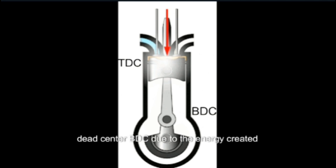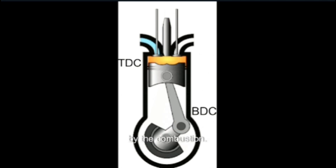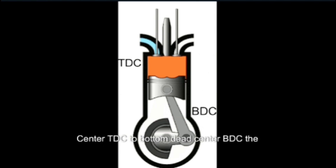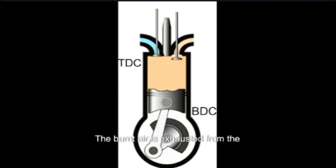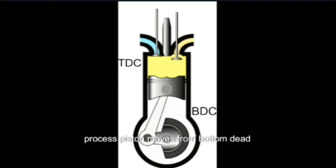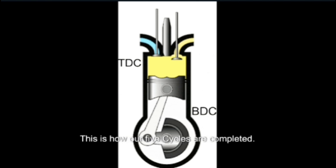Our fourth step is expansion. In this process, the piston again moves to Bottom Dead Center (BDC) due to the energy created by the combustion. As the piston head moves from Top Dead Center (TDC) to Bottom Dead Center (BDC), the expansion takes place. Our fifth and last process is exhaust. In exhaust, the burnt air is exhausted from the cylinder through the exhaust valve. In this process, the piston moves from Bottom Dead Center (BDC) to Top Dead Center (TDC). This is how our five cycles are completed.